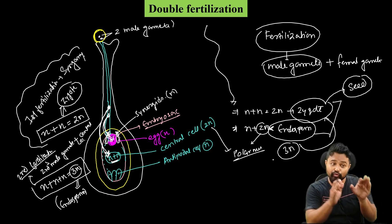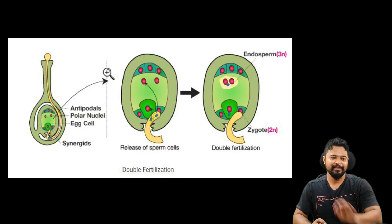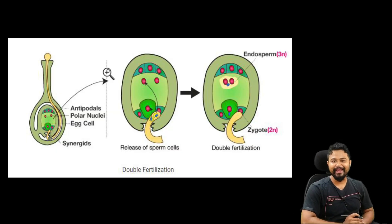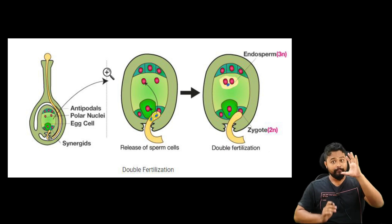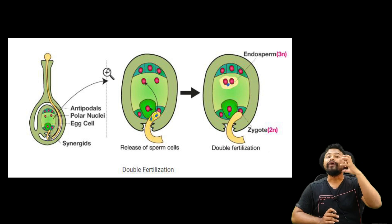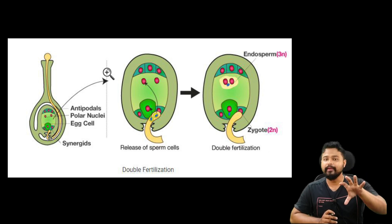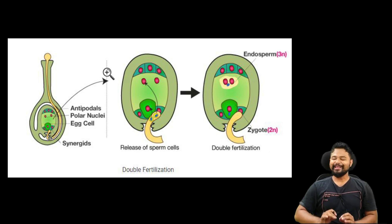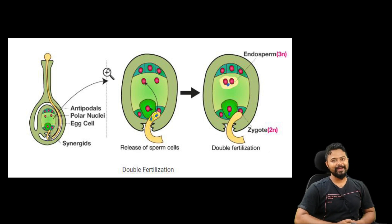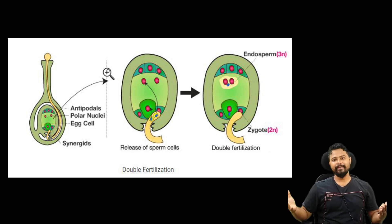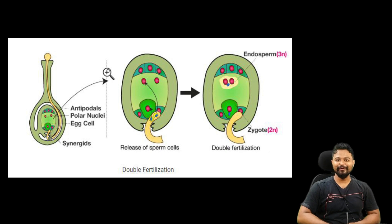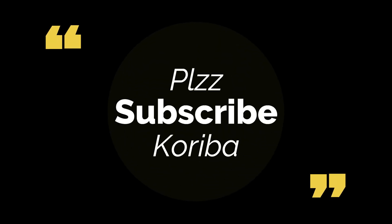So this is simply double fertilization. In the exam, draw a clear figure for this concept. Understand the concept of double fertilization in plants — this is a unique fertilization process. Thank you so much for watching my video. Please like, subscribe to my channel, and share it with your friends. Check the link in the description. Bye bye.